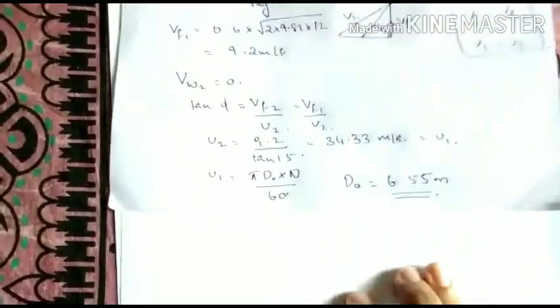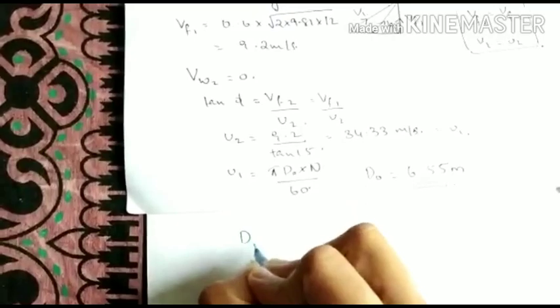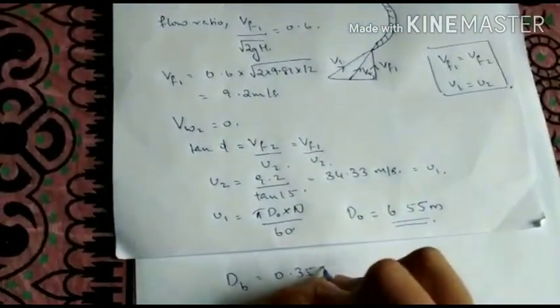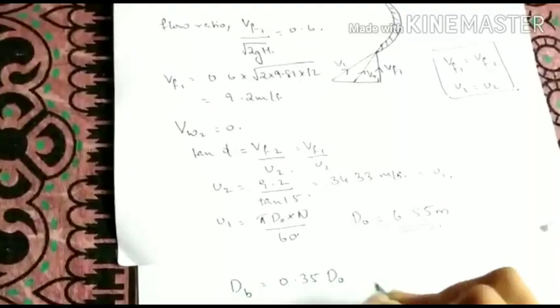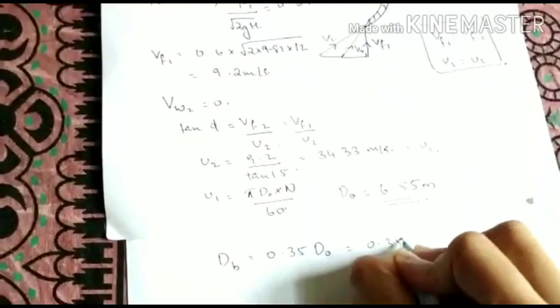Now next thing we can find is dB. From this we know dB is 0.35 times D0. So 0.35 into 6.55 you will get it as 2.3 meters.